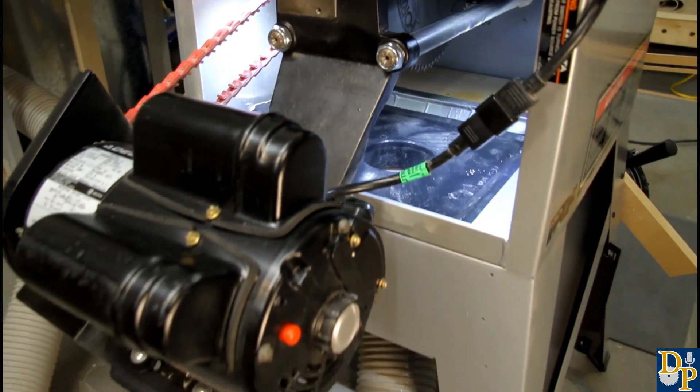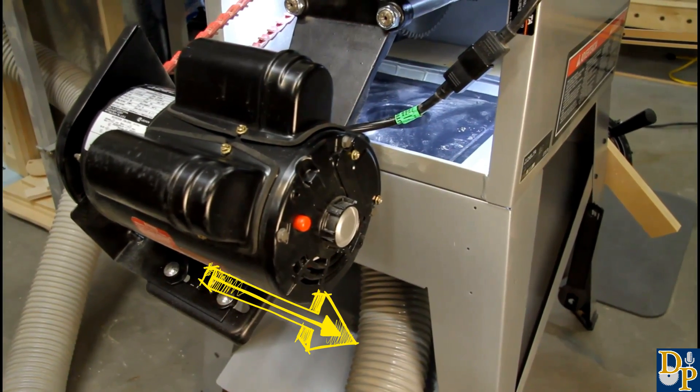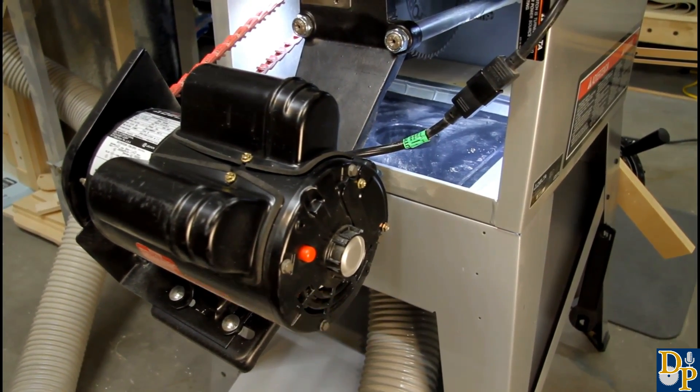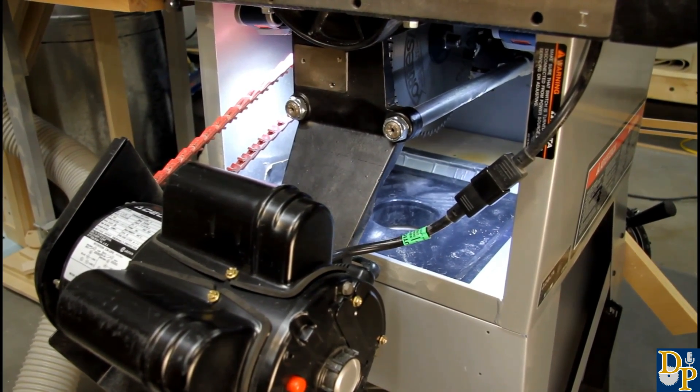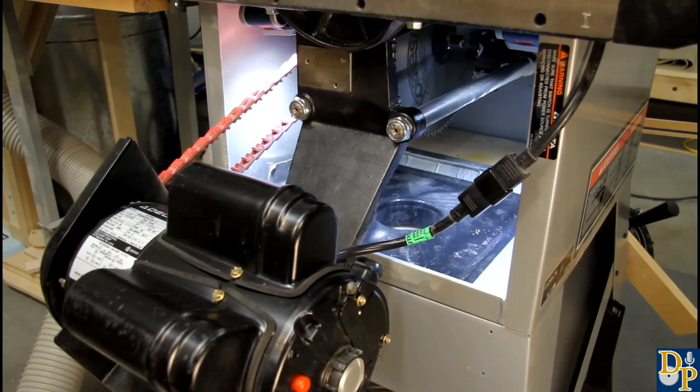So that connects to a four-inch dust collection hose that goes to my main dust collector. So that's really where the starting point is for just about any saw is to add some dust collection to the bottom of it.